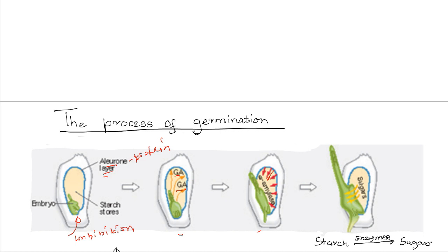Enzymes like amylase then catalyze the hydrolysis of food reserves such as starch into sugars. The food reserves in the endosperm and cotyledons are broken down into soluble forms — sugars, amino acids, fatty acids, and glycerol — which are transported to the growing centers of the plumule and the radicle, where they are used for respiration to provide energy and for synthesis of new cellular materials.